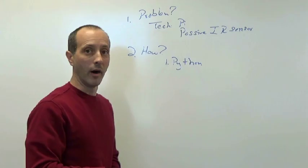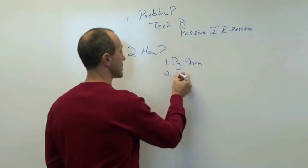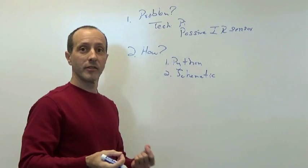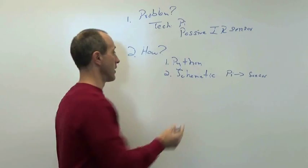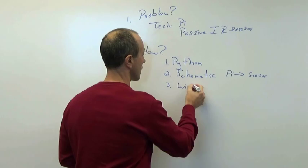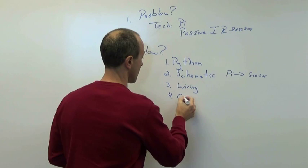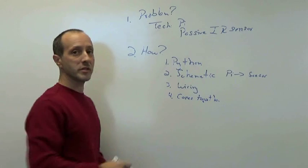The second thing they need to learn is how to draw the schematic. The circuitry in order to connect the Pi to the sensor. They need to know those two things. They're going to need to know some wiring and then how this all comes together. So the first thing they need to learn is how to use the technology itself.